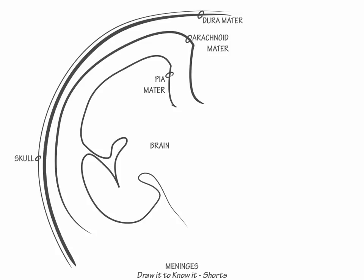Now draw the meningeal spaces. External to the dura mater, draw the epidural space, and internal to the dura mater, draw the subdural space. Then, internal to the arachnoid mater and external to the pia mater, draw the subarachnoid space.